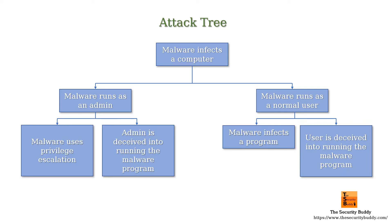For example, if a malware program infects a computer system, then the malware can either use privilege escalation by exploiting some vulnerabilities, or deceive an administrator into running the malware program. So, a malware program running as admin can be the condition of the parent node. One child node may indicate the condition the malware uses privilege escalation, and another child node can indicate the condition the admin is deceived into running the malware program. In that case, both the child nodes will be OR nodes and if any of the conditions is satisfied the parent node can be satisfied.